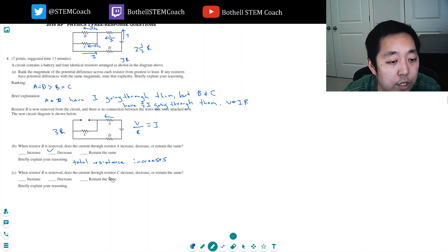When resistor B is removed, does the current through resistor C increase, decrease or remain the same? Okay, so this one's tricky.